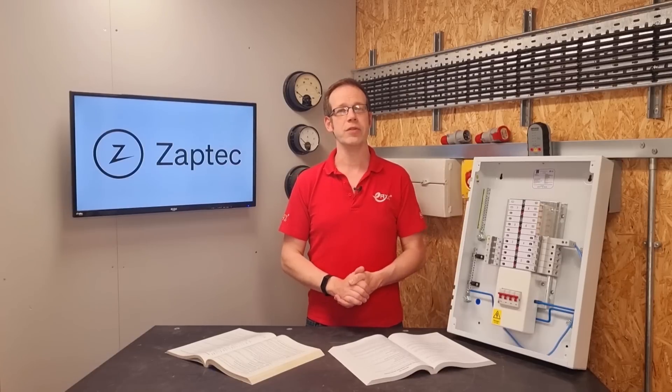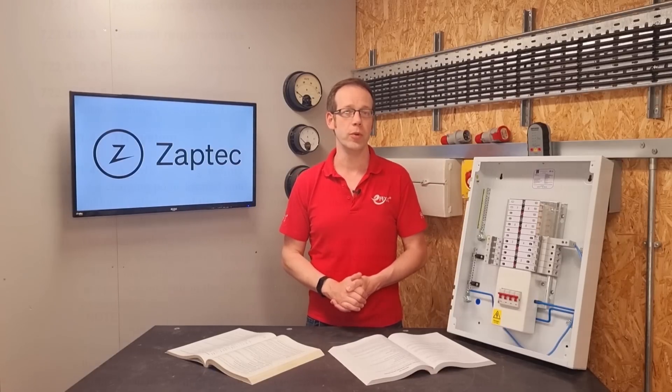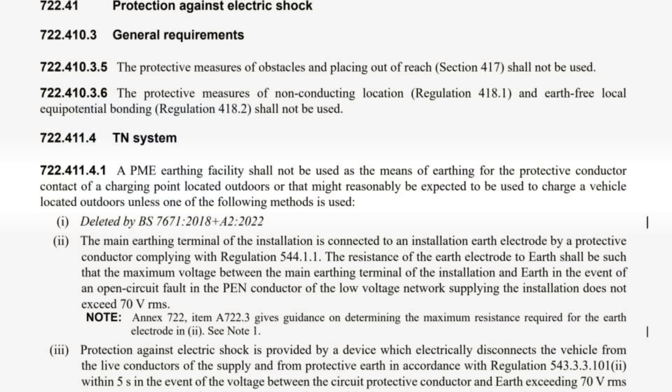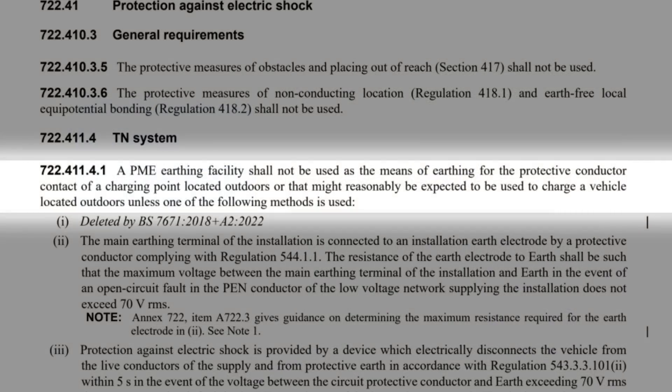Because of this, regulation 722.411.4.1 tells us that a PME earthing facility shall not be used as the means of earthing for the protective conductor contact of a charging point located outdoors or that might reasonably be expected to be used to charge a vehicle located outdoors, unless one of the following methods is used.